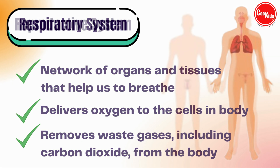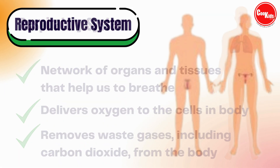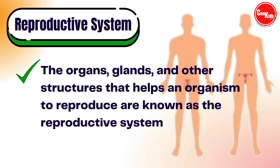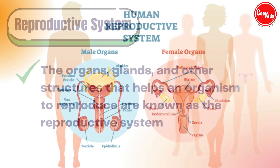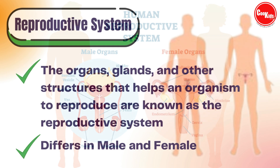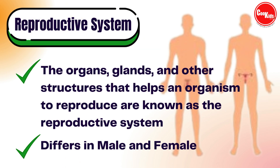Next comes the reproductive system. The organs, glands, and other structures that help an organism to reproduce are known as the reproductive system. It differs in males and females.